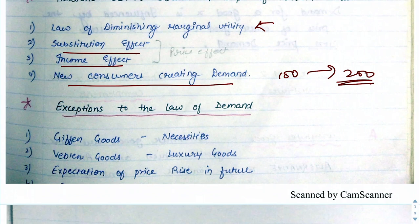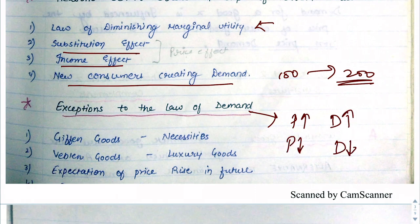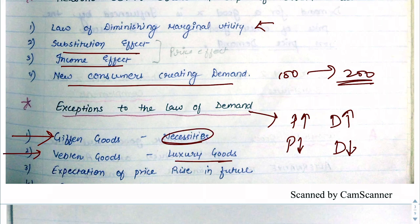There are certain exceptions to the law of demand — cases where price increases and demand also increases. The first is Giffen goods: as price increases, demand also increases, though real-life examples are hard to find. The second is Veblen goods — luxury goods like diamonds or jewelry. As the price of a diamond increases, people feel it is more prestigious and demand also increases.